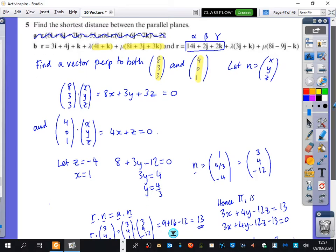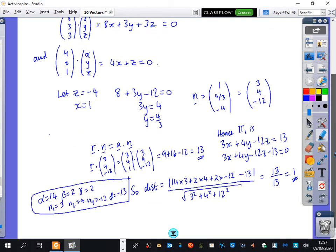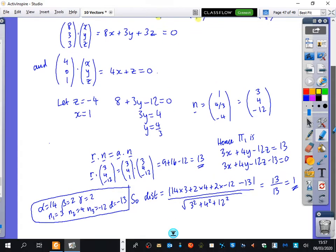Then I needed to find out what the rest of the Cartesian equation was. So I found out that r dot n equals a dot n. So that's r dot n equals a point that's on the plane. The point that's on the plane is 3, 4, 1.